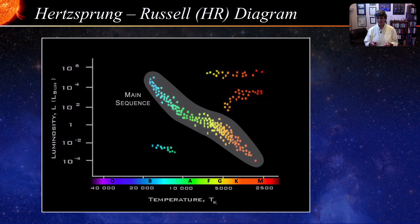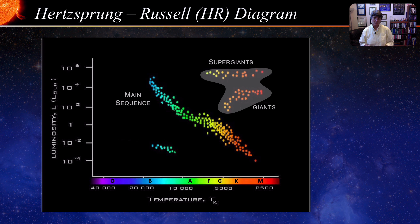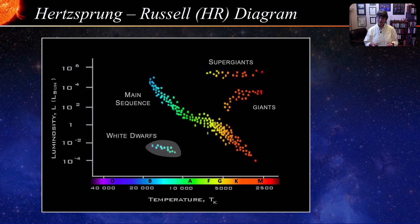So 90% of all stars are part of the main sequence, but what about the others? Some appear in the upper right of the diagram and some in the lower left. In the upper right corner, we see stars that have low temperature but are very luminous — therefore they must be very large. These stars are called red giants and red supergiants. In the lower left, we see stars that are very hot yet very dim — therefore they must be very small. These stars are called white dwarfs. The red giants and supergiants are stars that have begun their death process, while the white dwarfs are dead stars — stellar corpses.